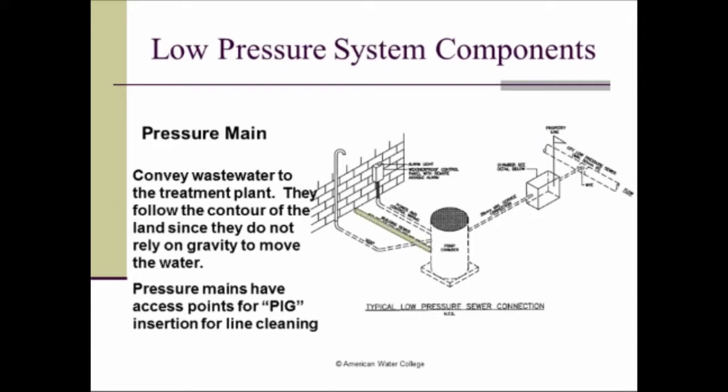And then there's the pressure main that conveys wastewater to the treatment plant. And they follow the contour of the land since they don't need to rely on gravity to move the water. So where a gravity system goes at a fairly constant slope going deeper and deeper on flat land, this low pressure system can stay at the same depth because it's relying on pressure to move the water and not gravity.